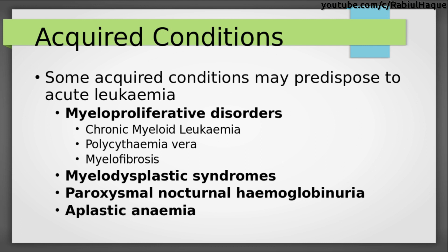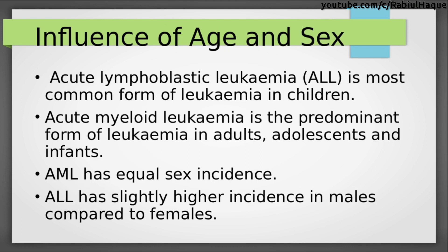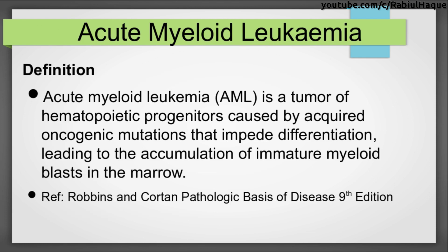Common myeloproliferative disorders include chronic myeloid leukemia, polycythemia vera, and myelofibrosis. Regarding influence of age and sex: acute lymphoblastic leukemia is the most common form of leukemia in children, while acute myeloid leukemia is predominant in adults, adolescents, and infants. Acute myeloid leukemia has equal sex incidence; however, acute lymphoblastic leukemia has slightly higher incidence in males compared to females.